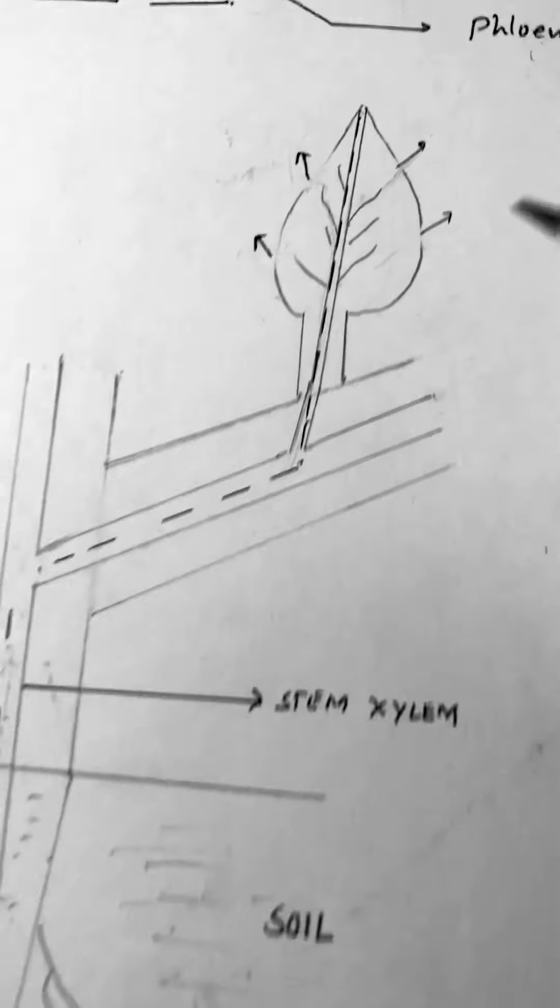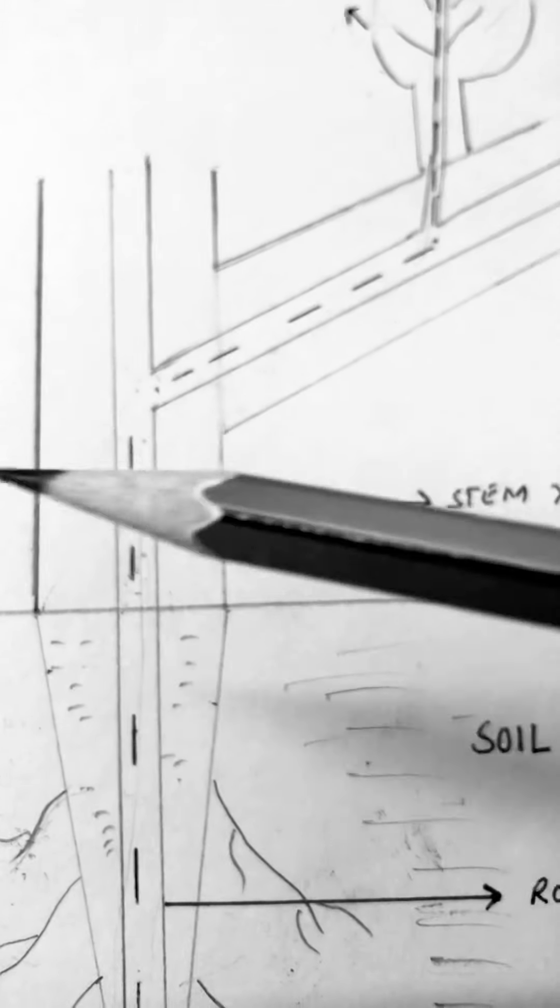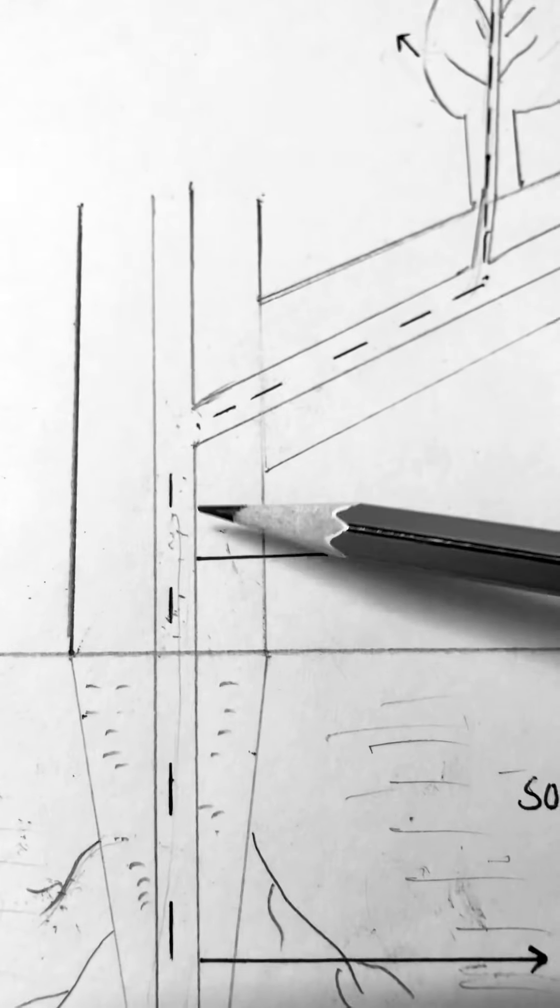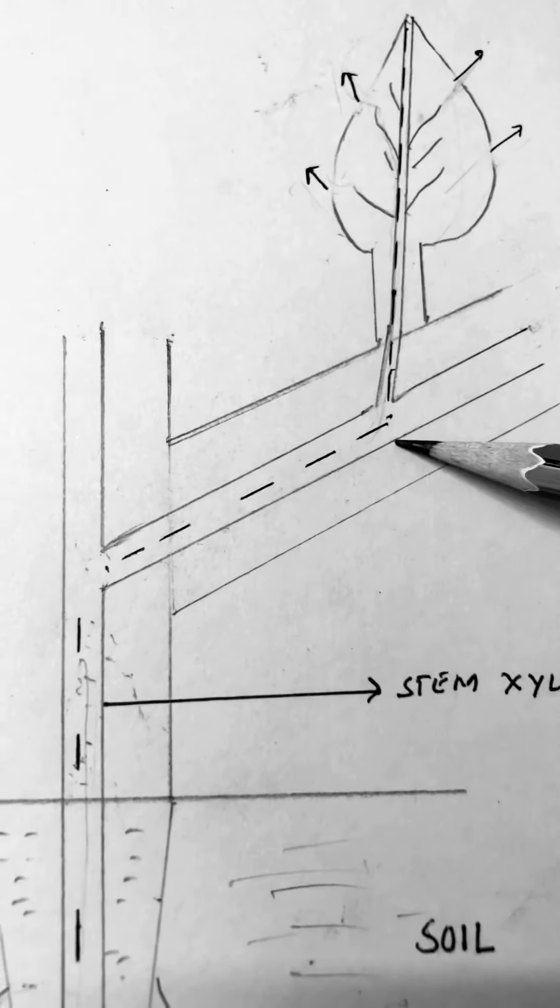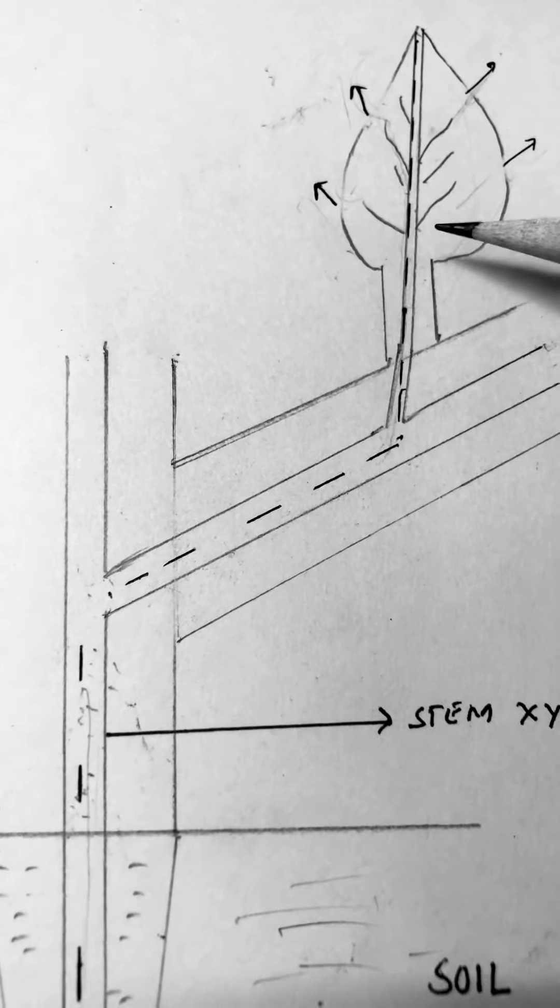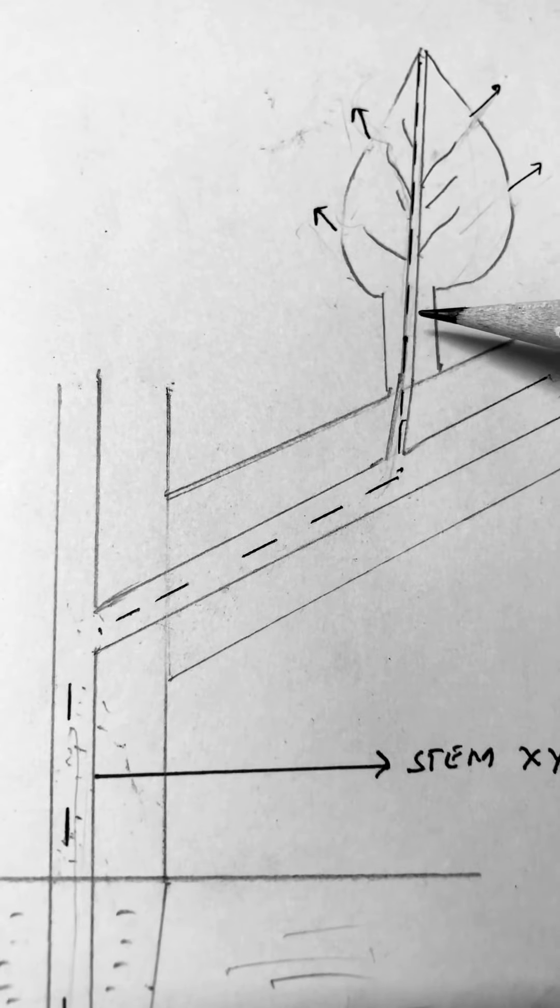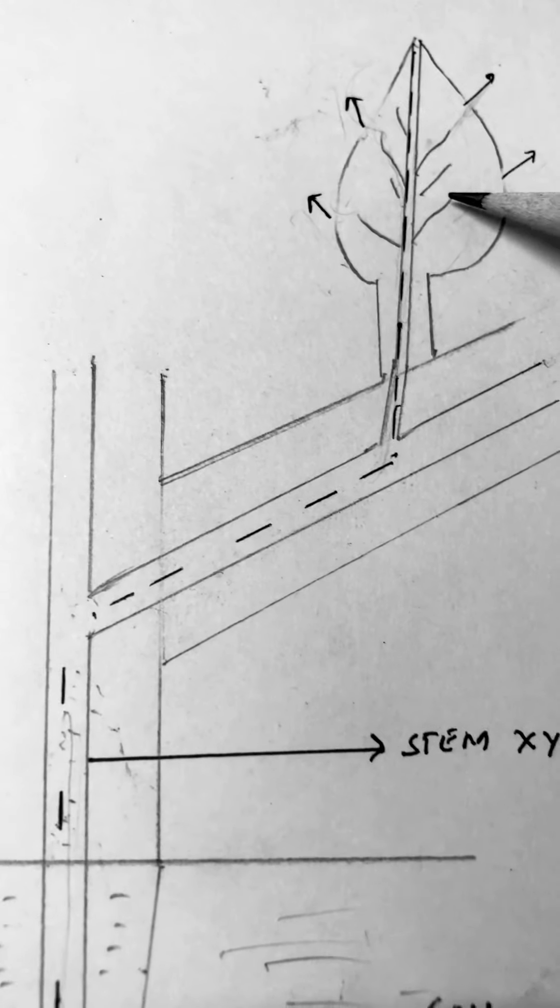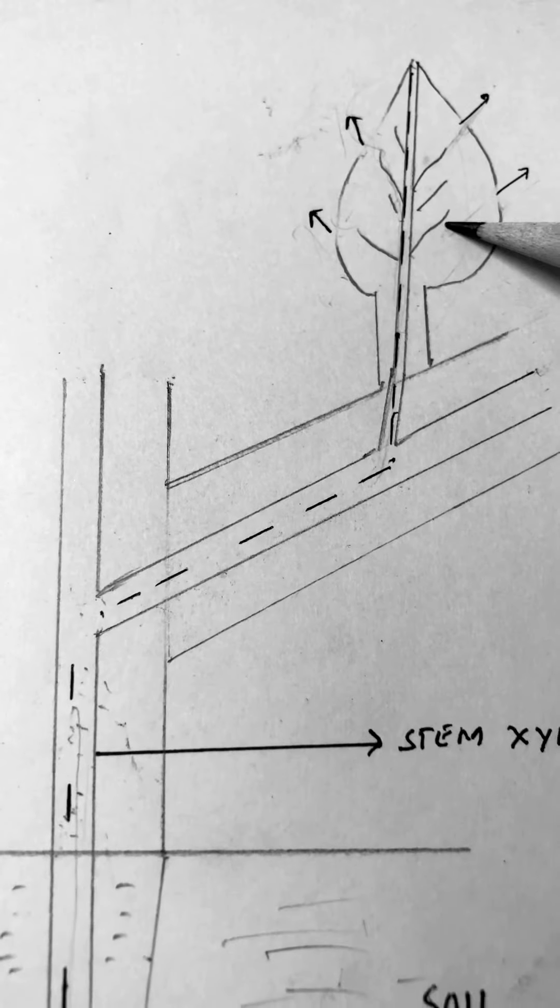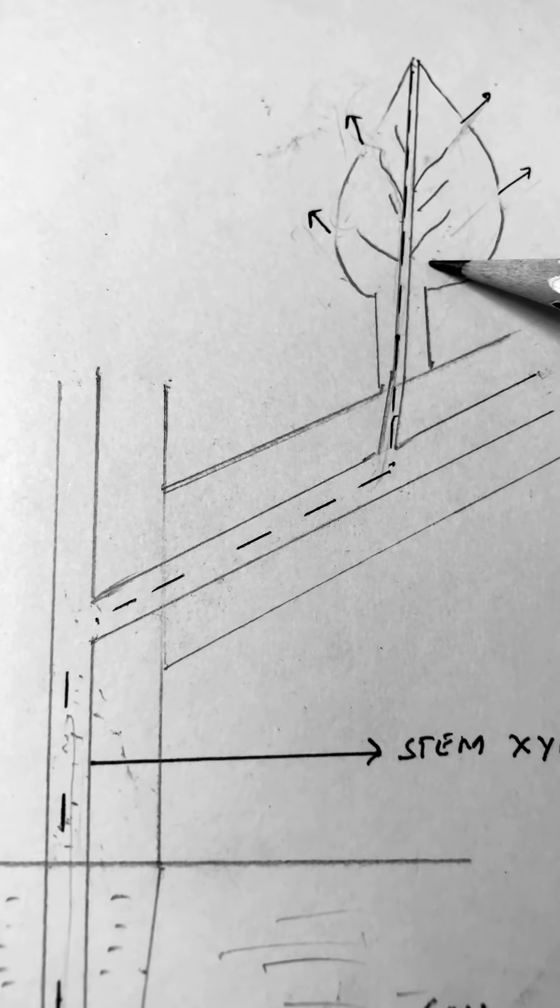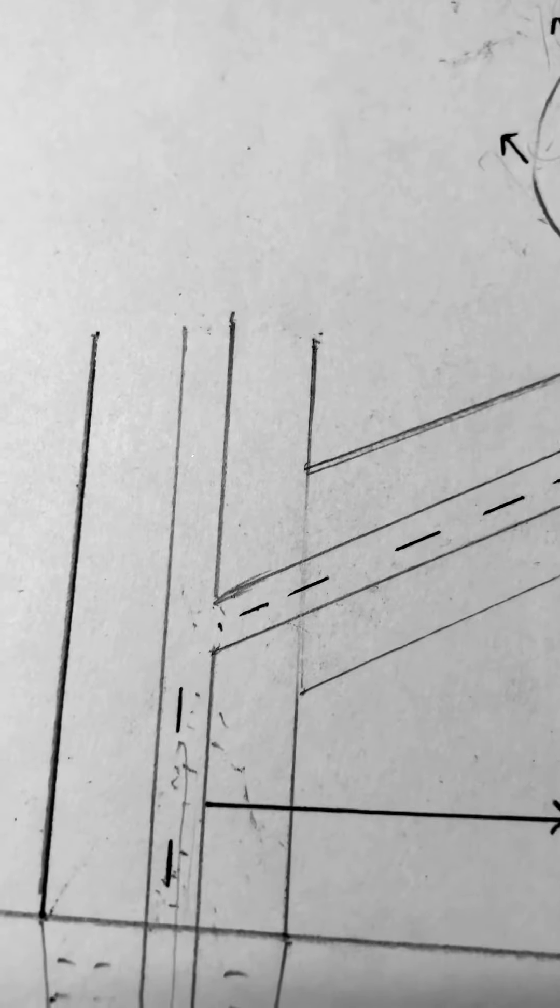So, basically, the upward movement of water is due to the suction pull and the suction pull is exerted by the air. And air is able to move into the xylem as a result of the process of transpiration. So, putting it together, transpiration is the major driving force behind upward movement of water in a plant which is also known as ascent of sap.